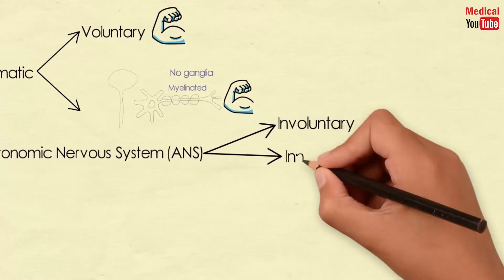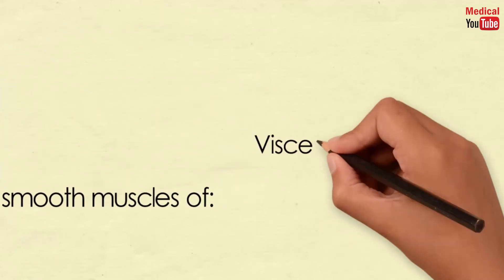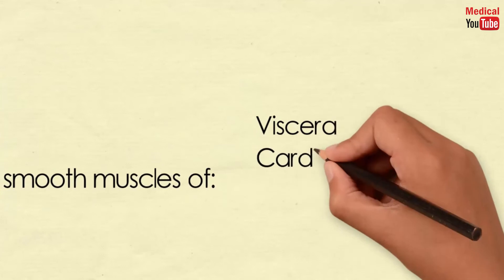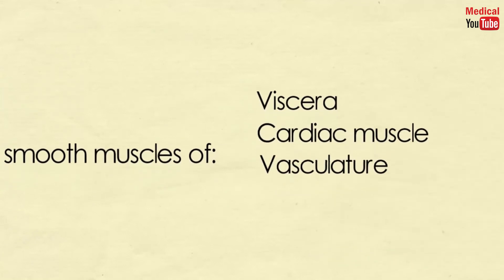It is composed of efferent neurons that innervate smooth muscle of the viscera, cardiac muscle, vasculature, and the exocrine glands.